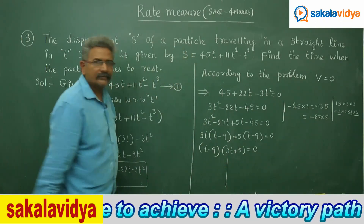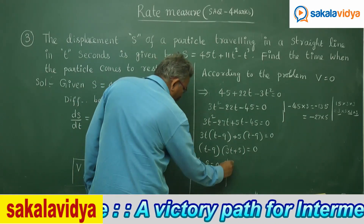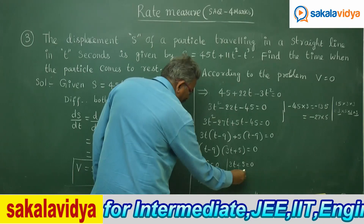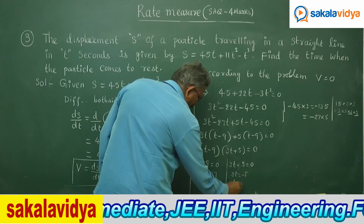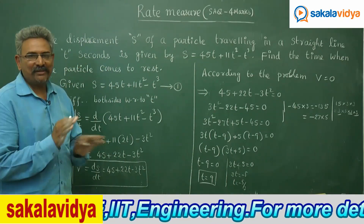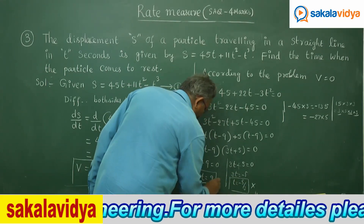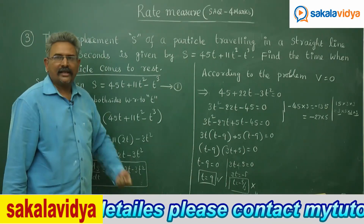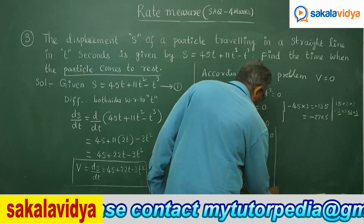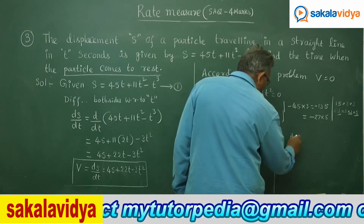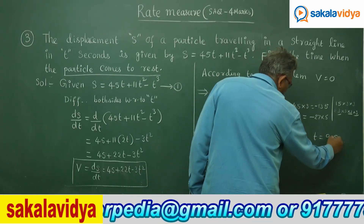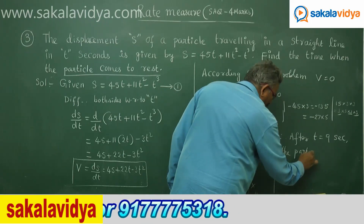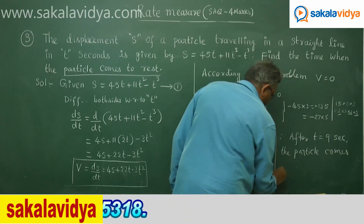Taking (t - 9) common: (3t + 5)(t - 9) = 0. This gives two cases: t - 9 = 0, so t = 9; or 3t + 5 = 0, so t = -5/3. Since time cannot be negative, t = -5/3 is discarded. Therefore, when t = 9 seconds, the particle comes to rest.